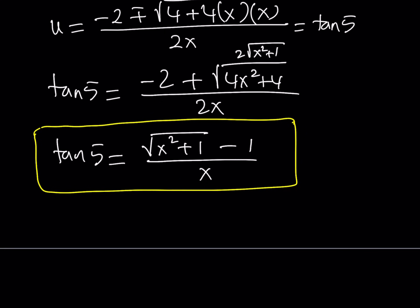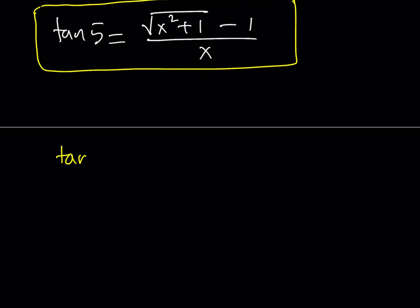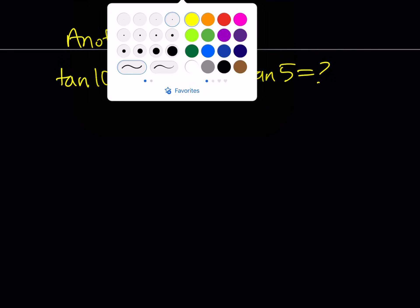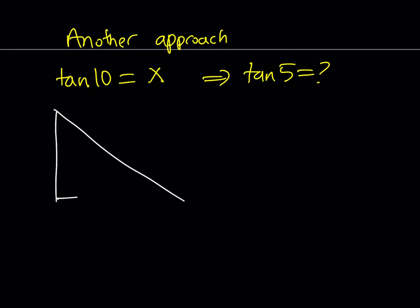I'm going to show you another method to find tangent 5 from tangent 10 — this is also very cool. Another approach: tangent 10 degrees equals x, and I'm trying to find tangent 5. Since 10 and 5 are both acute angles, I can just draw a right triangle. This is in no way drawn to scale, but just pretend this angle is 10 degrees. Tangent 10 equals x, so I can name the legs x and 1 since the ratio needs to be x. By the Pythagorean theorem, the hypotenuse is the square root of x squared plus 1.